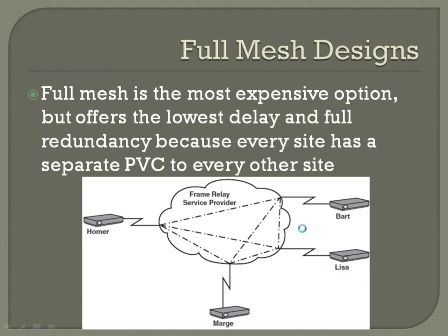Full mesh offers full redundancy — if any site drops, all remaining sites still have full connection to each other. However, even with just four routers you can see connections building up quickly. Think about 100 sites or 1,000 — it would quickly become completely unmanageable. Even if you could afford the cost, managing 100 different PVCs at every single location becomes quite cumbersome very quickly.